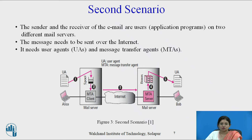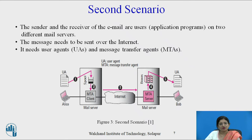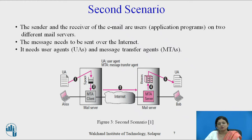Look at this diagram — two mail servers are shown. When Alice wants to send a message, she runs her user agent on her own system. The messages are sent to the mail server, where Alice's mail server maintains a queue known as a spool of messages. These messages are sent one by one to the MTA client running on Alice's machine, and then forwarded to the MTA server, which is Bob's mail server. Whenever Bob retrieves the message, he runs his user agent and accesses the message from his mailbox.